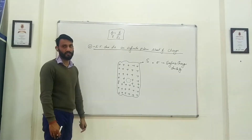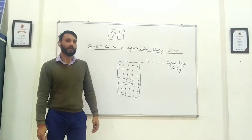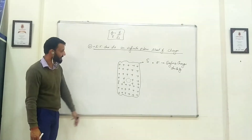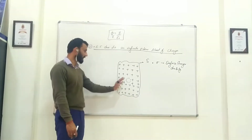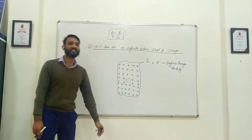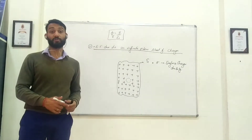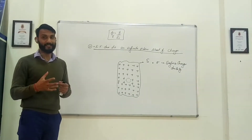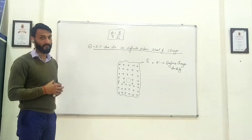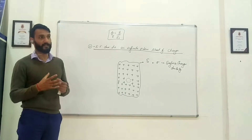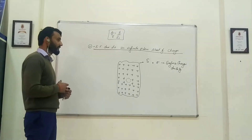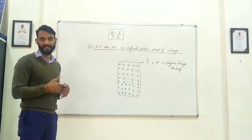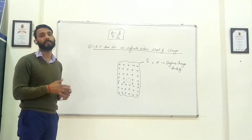As I told you, in any derivation we should always write an introductory part. Now I want you to take a moment and think about what the Gaussian surface could be. The Gaussian surface has three characteristics: number one, it should be symmetrical; number two, it should be closed; and number three, it should be three-dimensional.